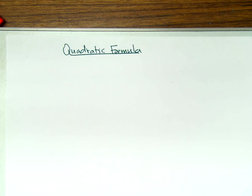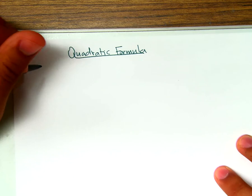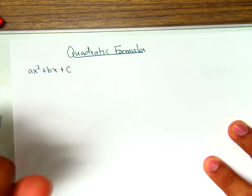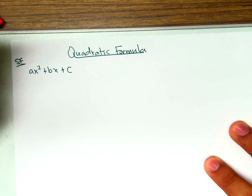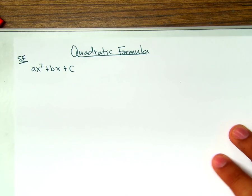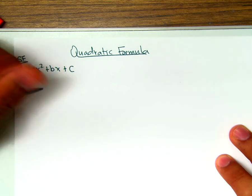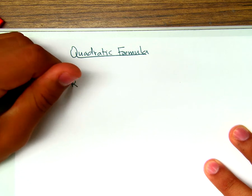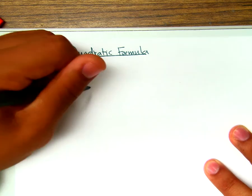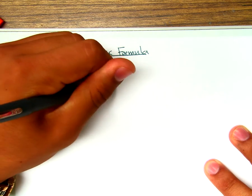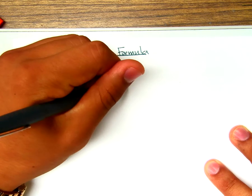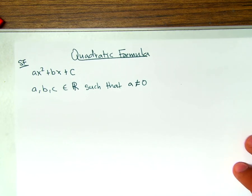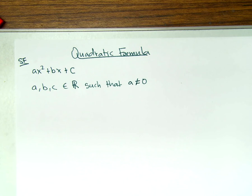The thing about the quadratic formula is that we have our standard form equation: ax squared plus bx plus c. This is standard form — the form that we want in order to use the quadratic formula. In order to use it, a, b, and c all have to be real numbers such that a does not equal zero. Basically, we have to have an x squared term. If a is zero, then it's not a quadratic equation.